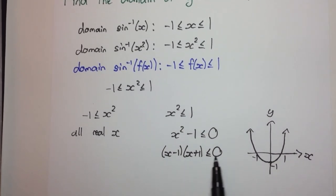So those are our x-intercepts. Now, what does this say? Well, where is this function less than or equal to 0?